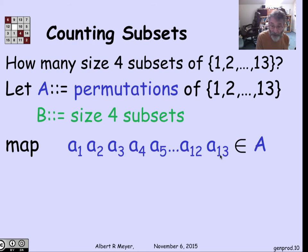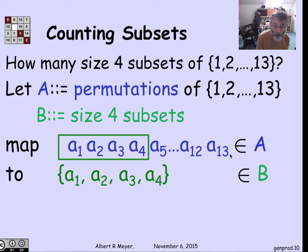The mapping could hardly be simpler. Take this permutation of the elements of A, A1 through A13 - these are the numbers 1 through 13 in some order. Simply map it by taking the first four elements and mapping it to the set of those first four elements. That's going to be a member of the set B of size 4 subsets.